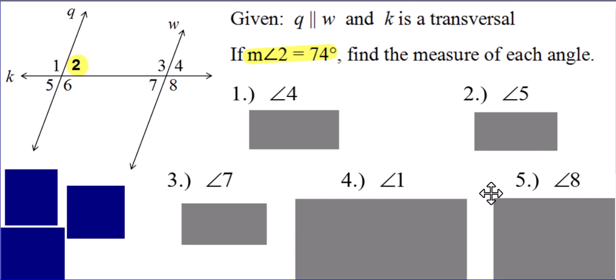Hit pause in the video. I want you to go ahead and use everything you've learned about vertical angles and supplementary angles — and what else? Corresponding angles, maybe even alternate interior angles, alternate exterior angles. Use what you've learned about those things to find the measure of angle four, angle five, angle seven, angle one, and angle eight. Hit pause, do these problems now, then hit play when you're ready to see how you did.